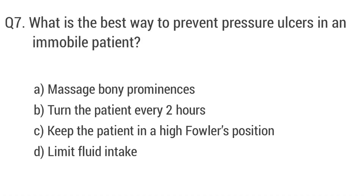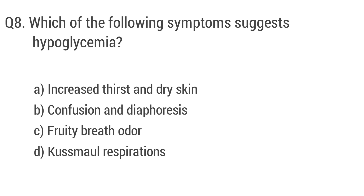Question 7: What is the best way to prevent pressure ulcers in an immobile patient? The right answer is option B: Turn the patient every 2 hours. Question 8: Which of the following symptoms suggest hypoglycemia? The right answer is option B: Confusion and diaphoresis.